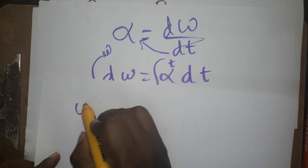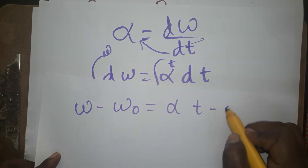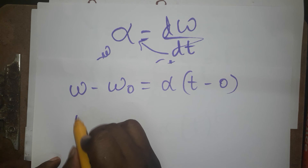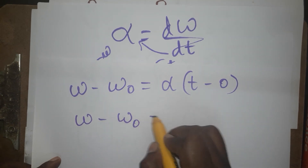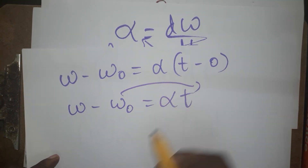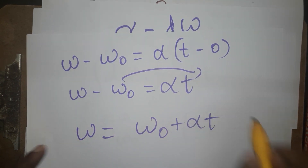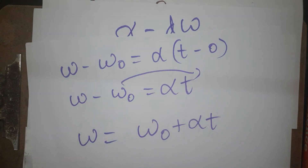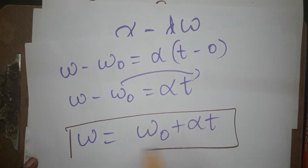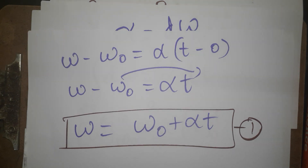Applying the limits: higher limit minus lower limit gives omega minus omega naught equals alpha times (t minus 0). So omega minus omega naught equals alpha t. Bringing omega naught to the other side, we get omega equals omega naught plus alpha t. Finally, we have derived the first equation of rotational motion using both methods. Thank you for watching — if you like my channel, please subscribe.